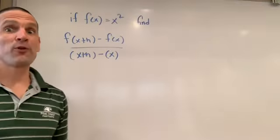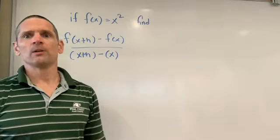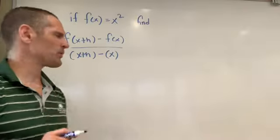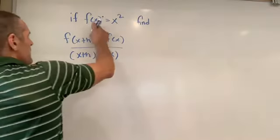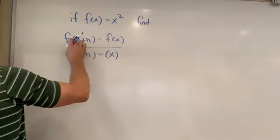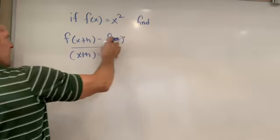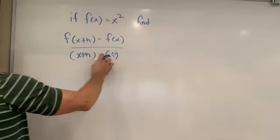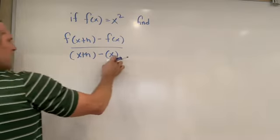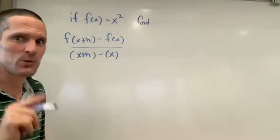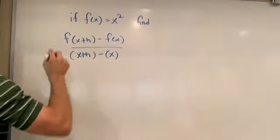So, here's our first bite of the apple. Here's the difference quotient. I know this means nothing to you now, but it will shortly. If I'm given this function, I'm asked to find f of x plus h minus f of x over x plus h minus x. That seems like slope. If that seems like slope to you, you're on the right track.